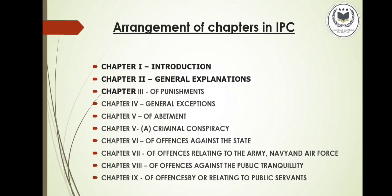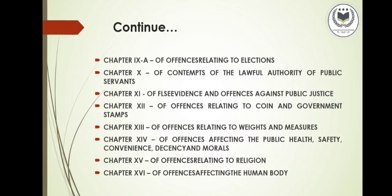Chapter 6 is Offenses Against the State, with 12 sections. Chapter 7 is Offenses Relating to the Army, Navy and Air Force, with 11 sections. Chapter 8 is Offenses Against the Public Tranquility, with 23 sections. Chapter 9 is Offenses by or Relating to Public Servants, with 9 sections. Chapter 9A is Offenses Relating to Elections, with 9 sections. Chapter 10 is Contempts of Unlawful Authority of Public Servants, with 20 sections. Chapter 11 is False Evidence and Offenses Against Public Justice, comprising 46 sections.